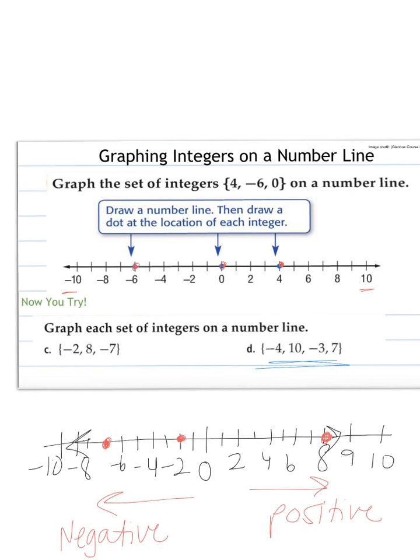So we're looking for negative 4, which is to the left. So we start at 0, count to the left: 1, 2, 3, 4, and drop my point.